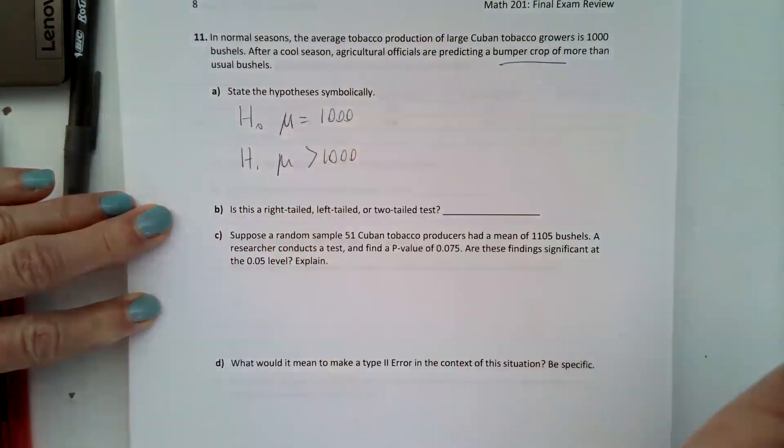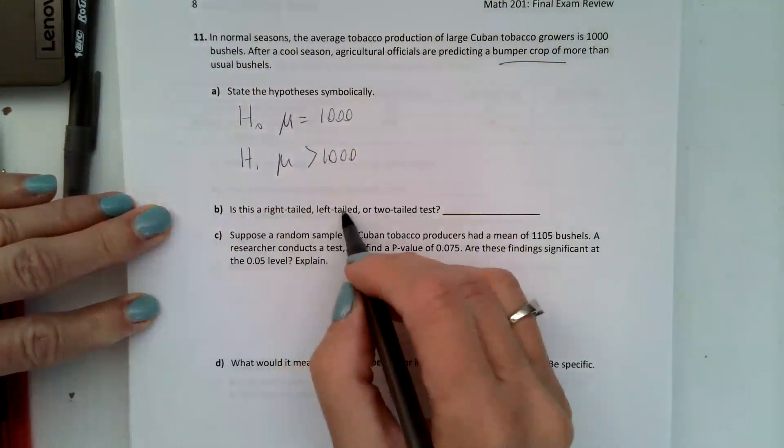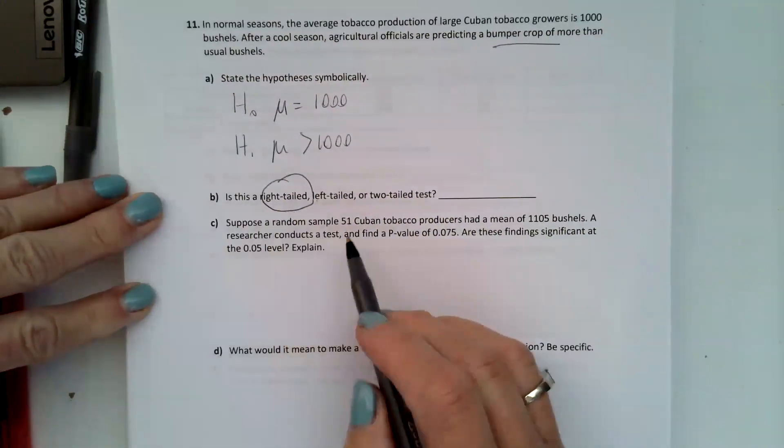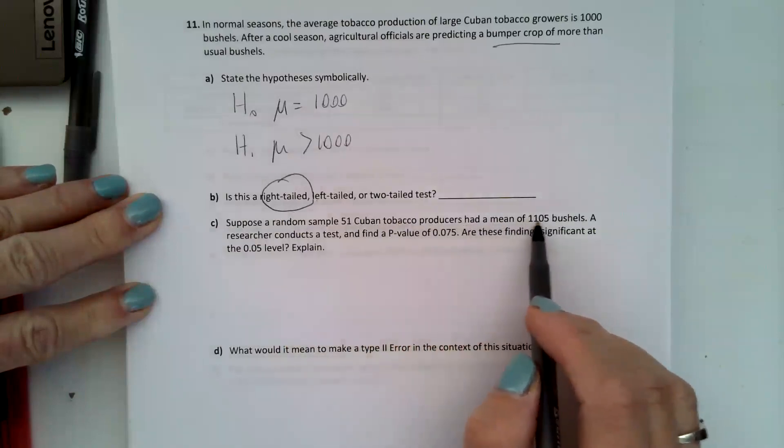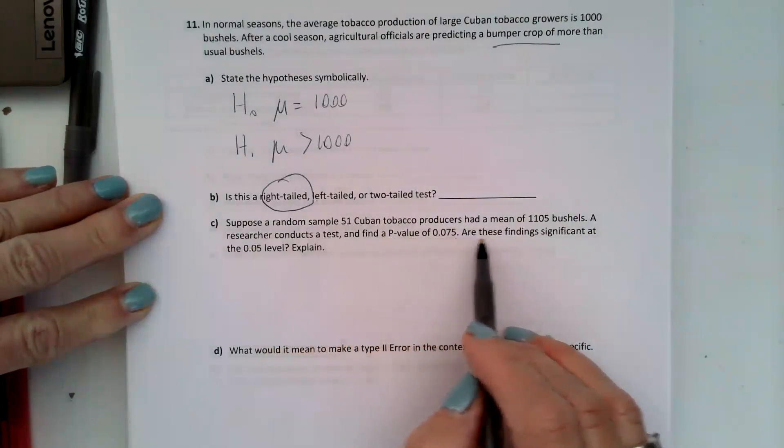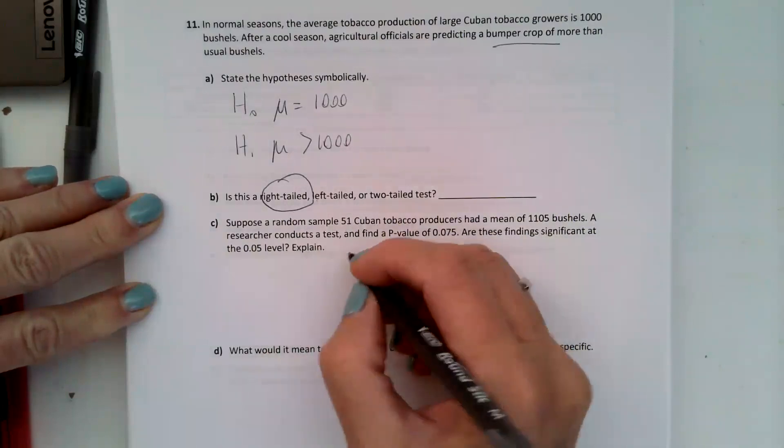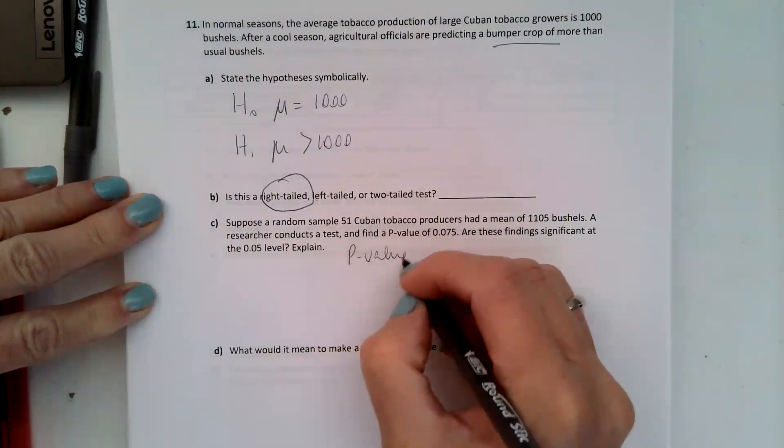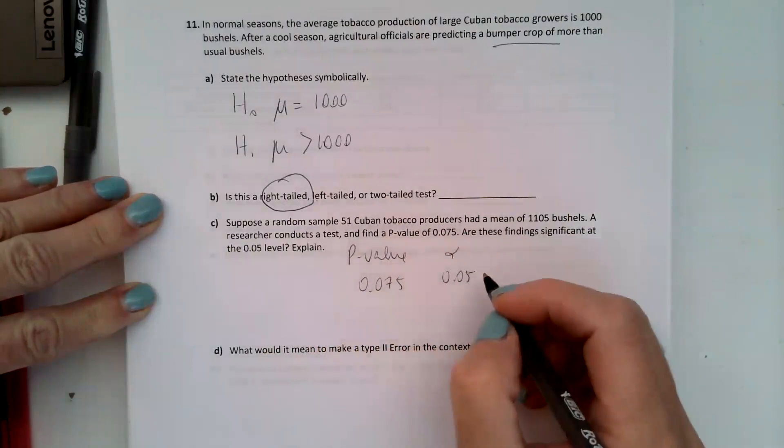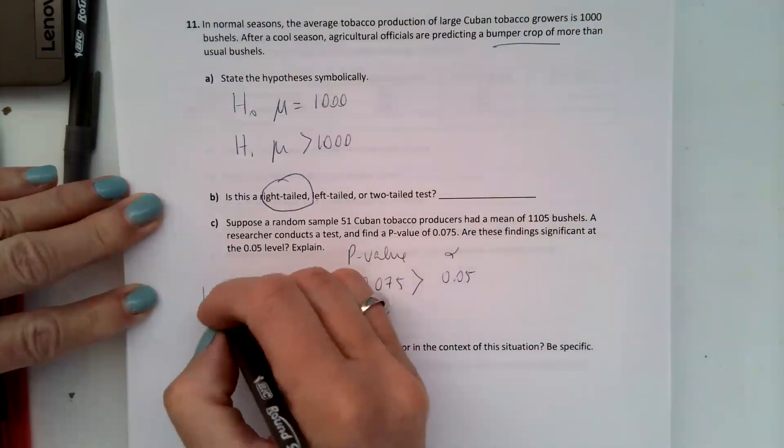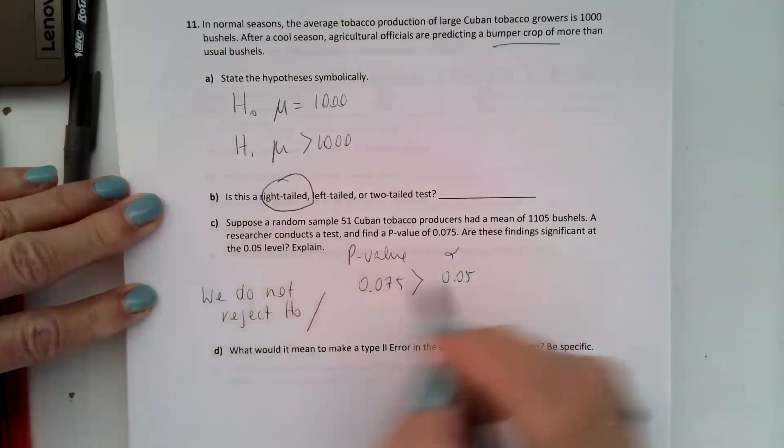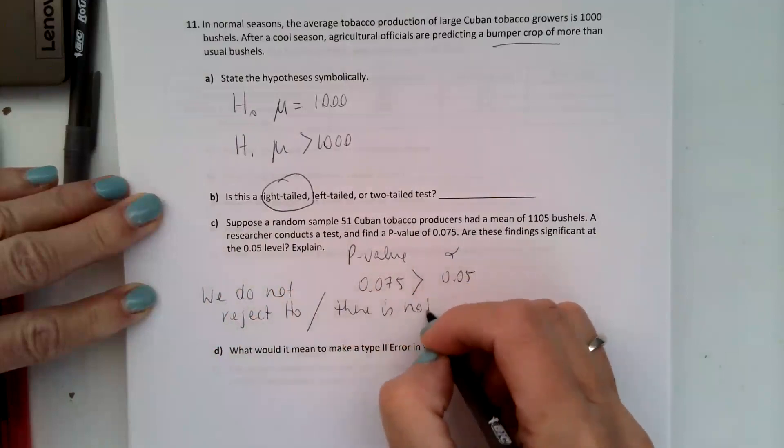Is this a right tail, left tailed, or two-tailed? It's pointing to the right, the right tailed test. Suppose a random sample of 51 Cuban tobacco producers had a mean of 1105 bushels. A researcher conducts a test and they find a p-value of 0.075. Are these findings significant at the 0.05 level? So remember we always compare our p-value on the left to our alpha on the right and we only reject if it's less than, but it's greater than. So we do not reject H0, which also means there is not significant findings.